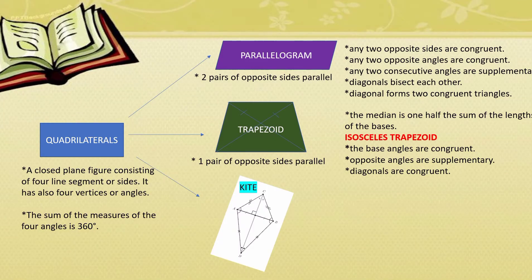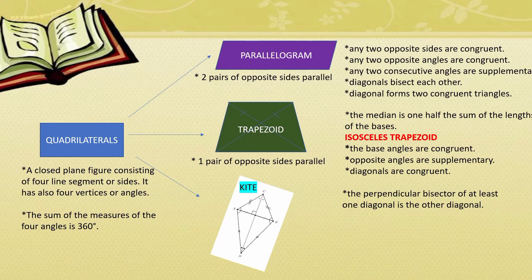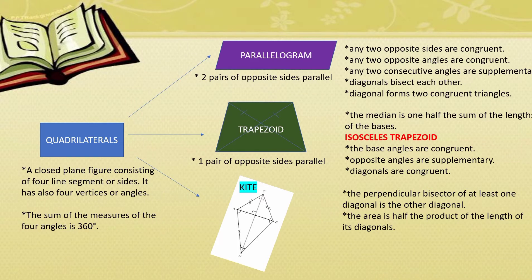Let's have a kite. In a kite, the perpendicular bisector of at least one diagonal is the other diagonal. Diagonal CD bisects diagonal AB, so AB is divided into two congruent segments. And angle D is divided into two congruent angles. Side AC is congruent to side BC, and side AD is congruent to side BD. The area of a kite is half the product of the lengths of its diagonals.